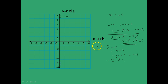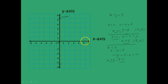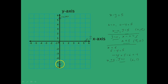The point 0 comma minus 5 is plotted here, and 5 comma 0 is plotted on the x-axis. Next we plot x equal to 6 and y equal to 1, that is the point 6 comma 1. You can see how the solutions of the equation x minus y equal to 5 seem to lie on a straight line.